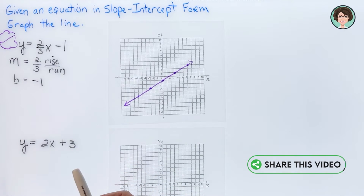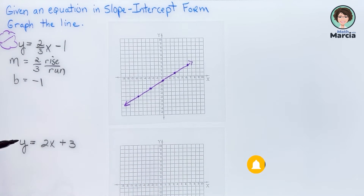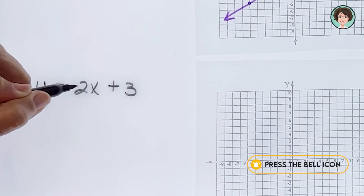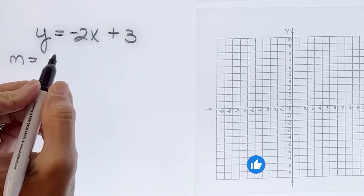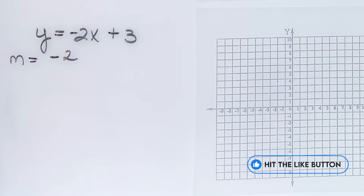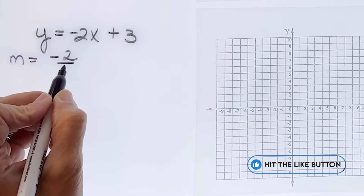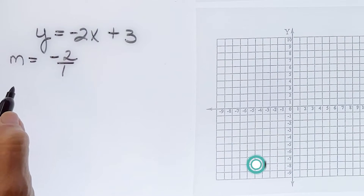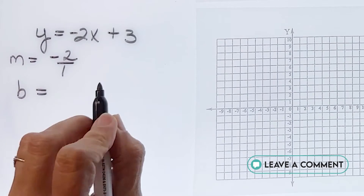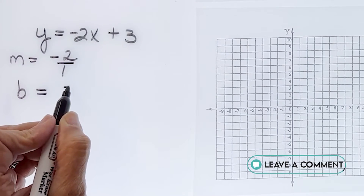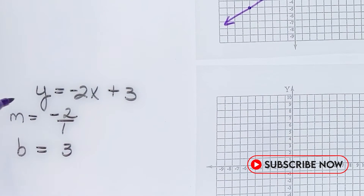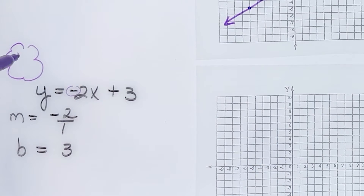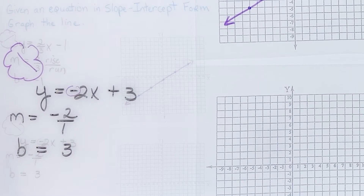For the next equation, y equals negative 2x plus 3: my slope is negative 2 — and remember every whole number is over 1, so I write it as a fraction — and my y-intercept is positive 3 because it says plus 3. I see my negative sign, so my line is going to end up going downhill.